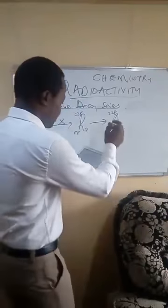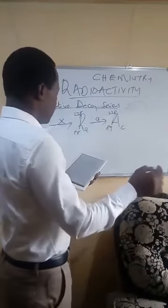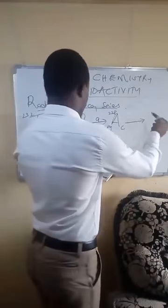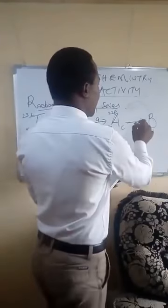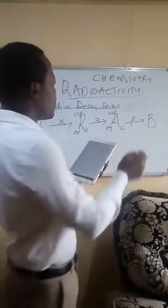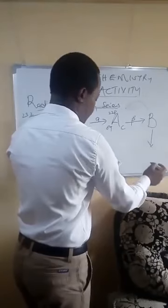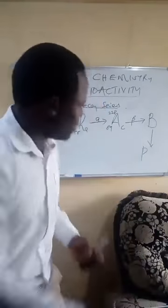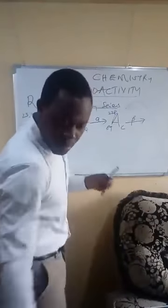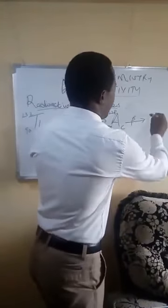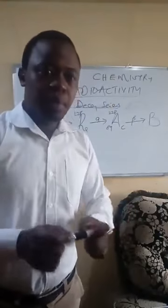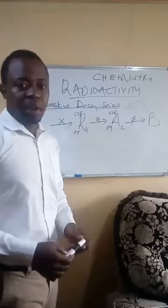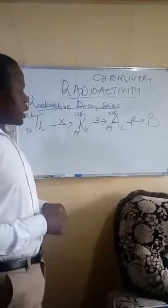This one we'll call A, then this disintegrates forming another one we'll call B, and the kind of radiation taking place here is beta. We can stop there for now and attempt to solve those. Students who are online, try to solve and get X, try to get A and try to get B. I believe you have somewhere to write — try to get those values in one minute and then we'll be back.